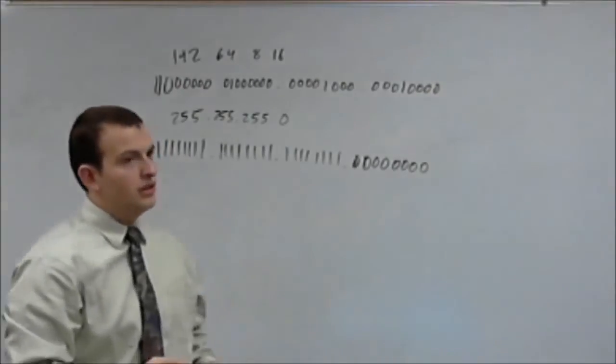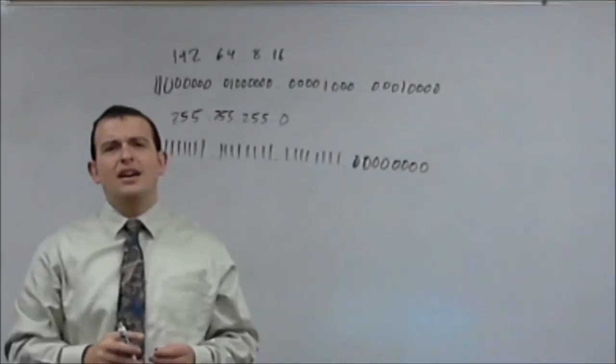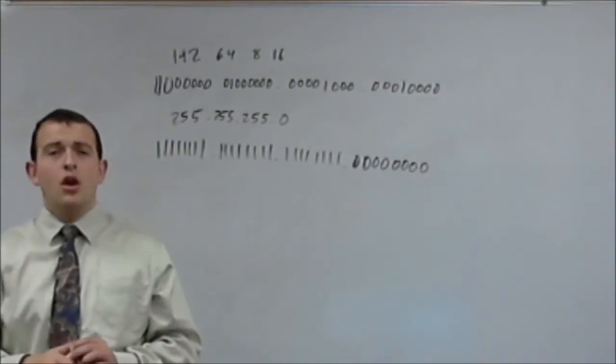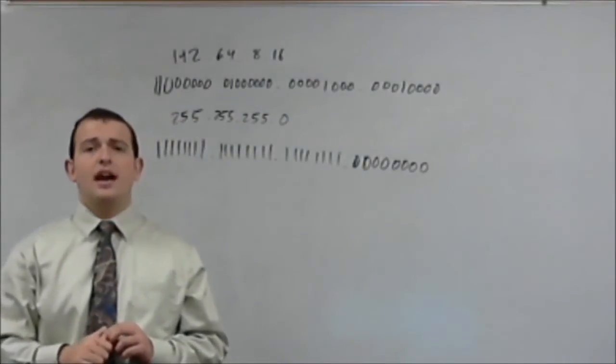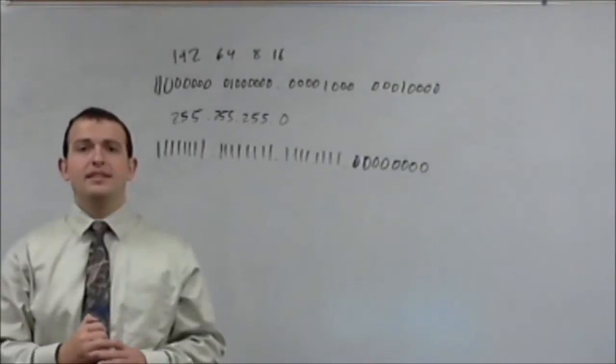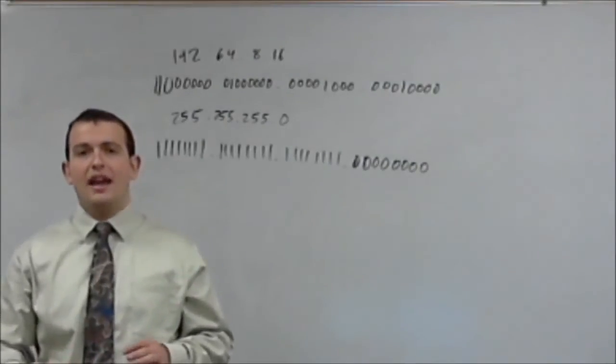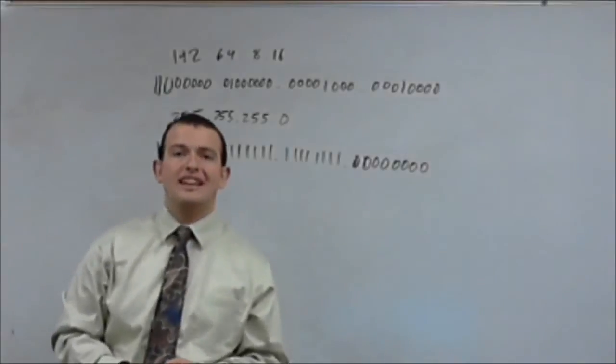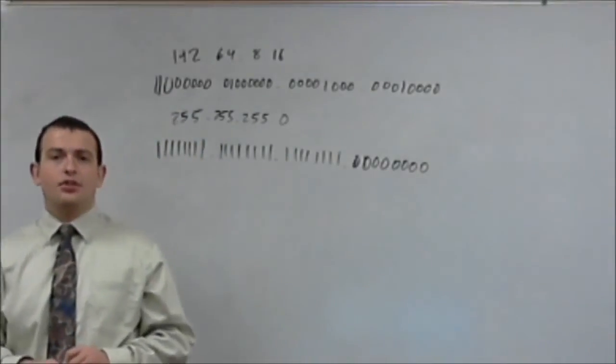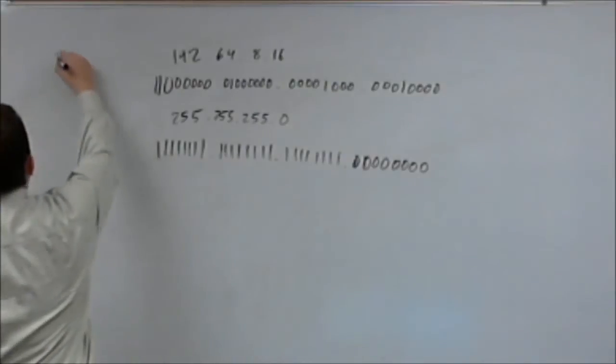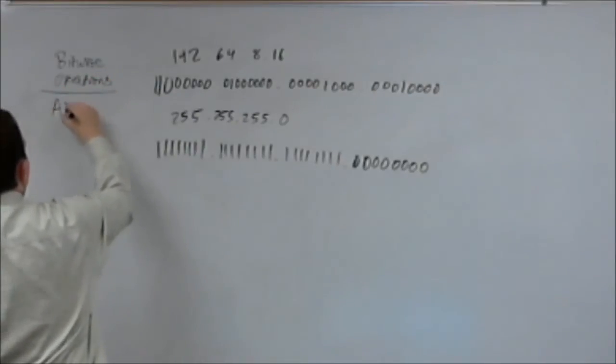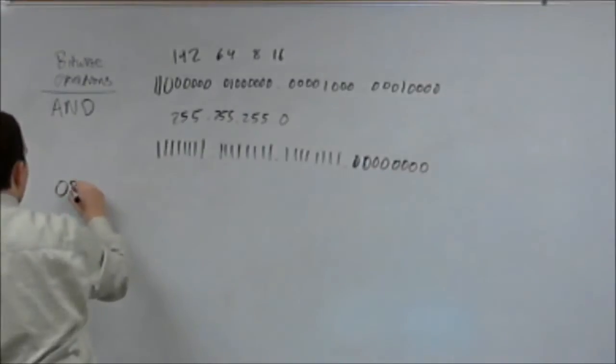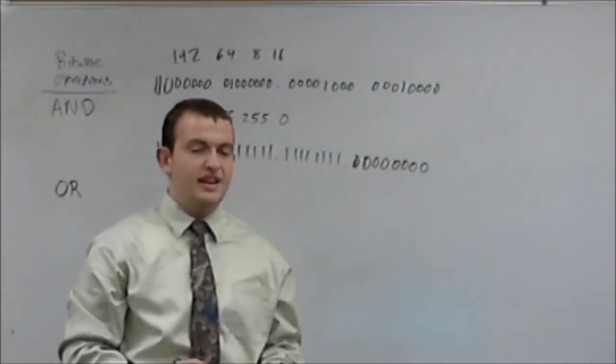Now, before we go any farther, let's kind of discuss bitwise operations. What bitwise operations are is they are the very basic commands that happen to bits. They are what bits go through to check and to move around and to become molding data, to do things. The three bitwise operations you're going to need to know are: and, or, and not.